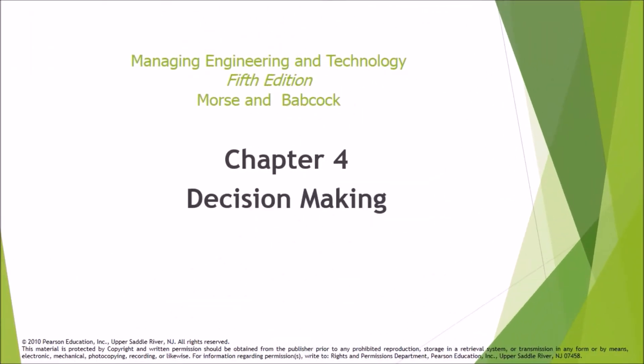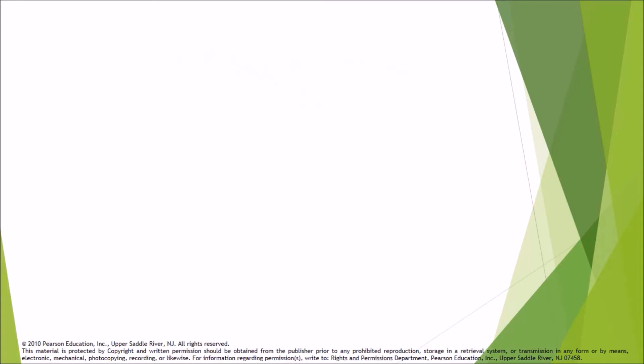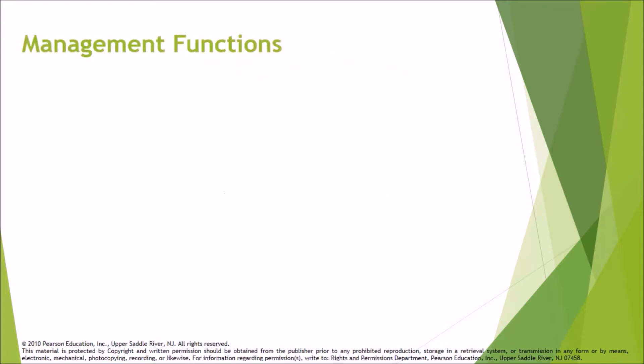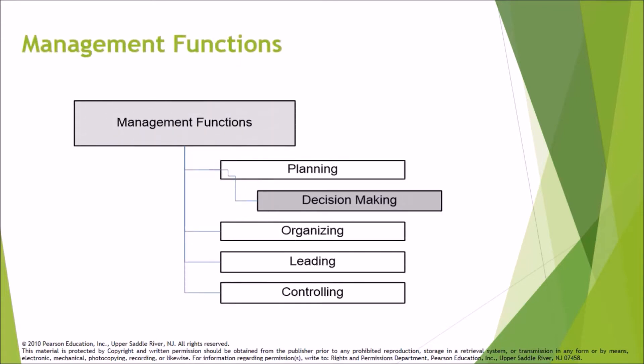Chapter 4: Decision-Making. Management functions is divided into planning, decision-making, organizing, leading, and controlling. This chapter covers decision-making.